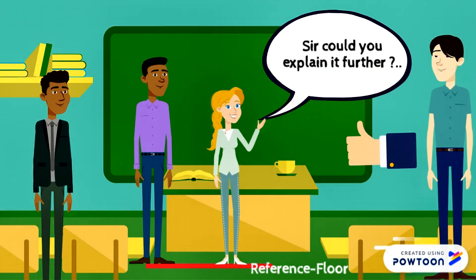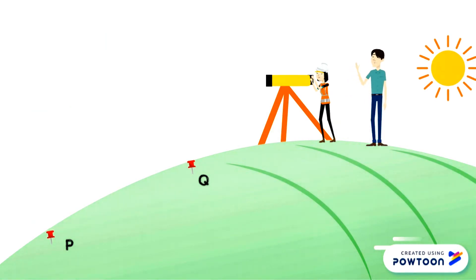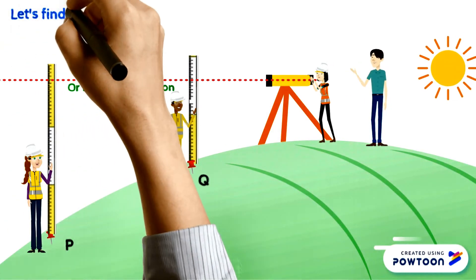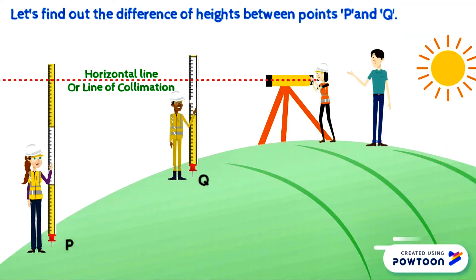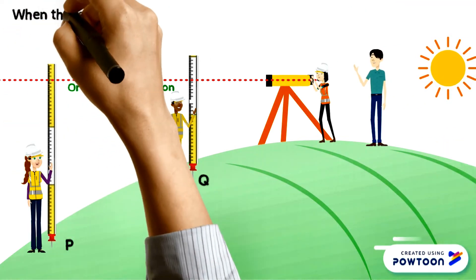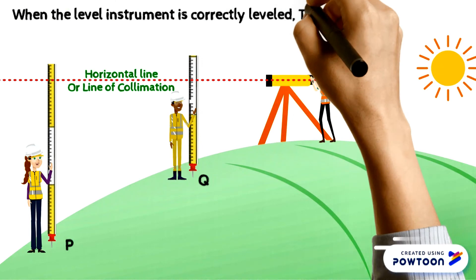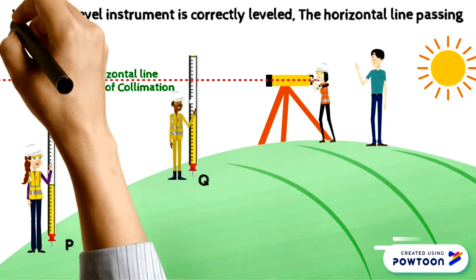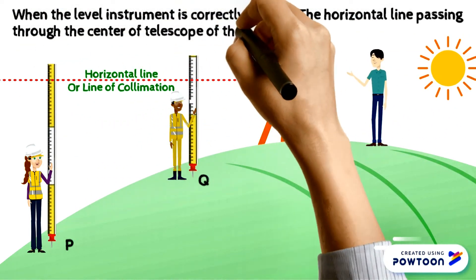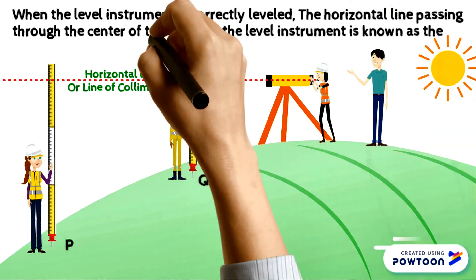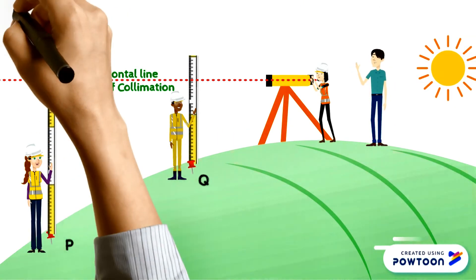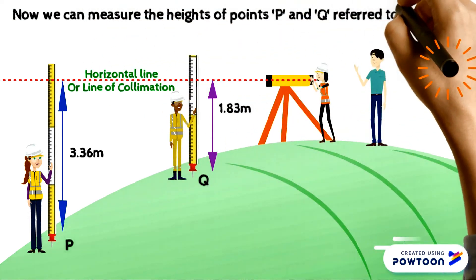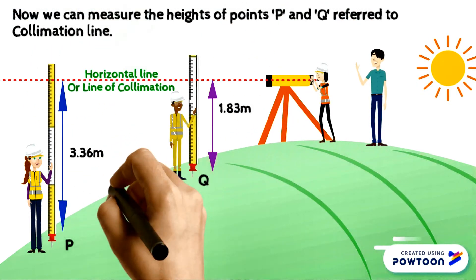Sir, could you please explain it further? Let's find out the difference of heights between point P and Q. When the level instrument is correctly leveled, the horizontal line passing through the center of telescope of level instrument is known as the collimation line. Now we can measure the heights of points P and Q referred to collimation line.